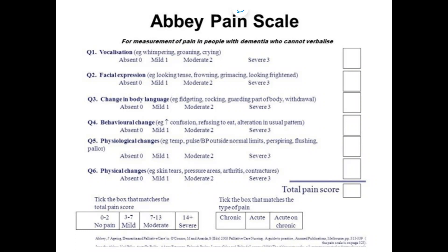This is more about someone who potentially can't verbalise, and this is where subjectivity comes in — one person might score it more, one might score it less. We talk about making sure you involve the full team or family members who know this person really well. You then do a total pain score: 0 to 2 is no pain, 3 to 7 is mild, 7 to 13 is moderate, and 14 plus is severe. It gives you an idea whether the pain is actually increasing, and whether it's chronic, acute, or acute on chronic.